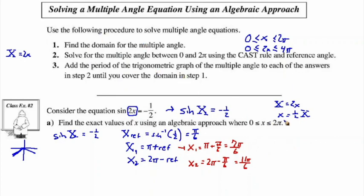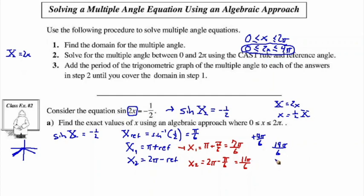Step 3 says we add the period to cover the full domain up to 4pi. Adding 2pi (which is 12pi/6) to 7pi/6 gives 19pi/6. Adding another period would give 31pi/6, which is past 4pi, so we stop. For the second family, 11pi/6 plus 12pi/6 gives 23pi/6. Going beyond 24pi/6 exceeds 4pi. So we have four X values covering 0 to 4pi: two from each family.